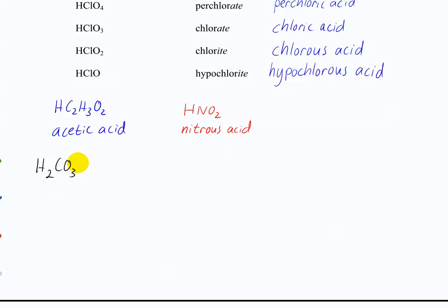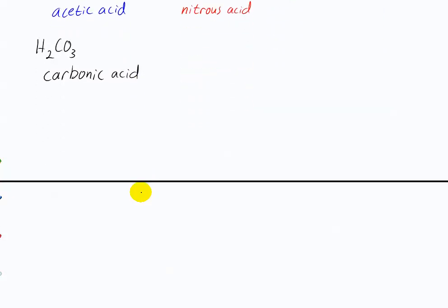What's the anion here? Carbonate. So what's the acid? Carbonic acid. This is what you have in soft drinks. There is no bicarbonate, because if it's just another hydrogen, it becomes this.